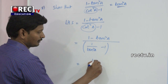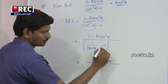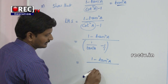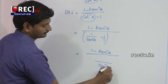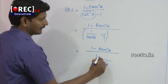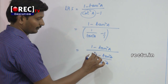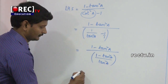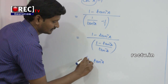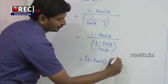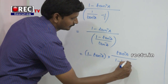That is equal to (1 - tan²a) divided by — we take the LCM here. The LCM is tan²a, so the denominator becomes (1 - tan²a) over tan²a. We now have (1 - tan²a) divided by (1 - tan²a) / tan²a.